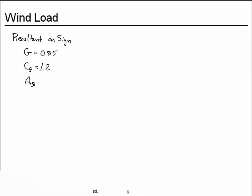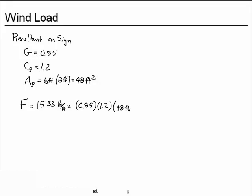The area of the sign, 6 feet times 8 feet, 48 feet squared. And let's put them all together. The resultant force is 15.33 pounds per foot squared, 0.85, 1.2, 48 feet squared. Put them all together. The answer, 751 pounds act on the sign.